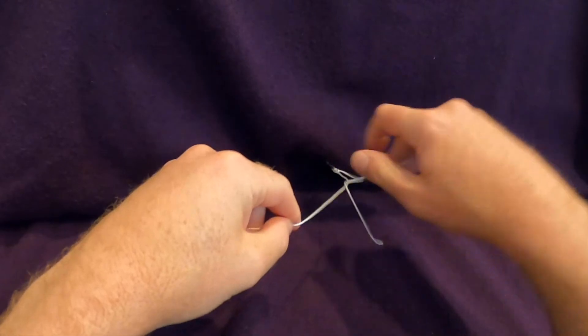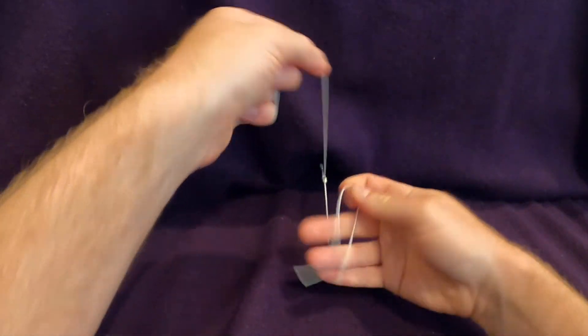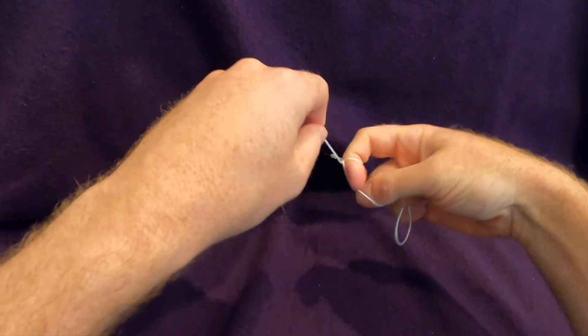Let's watch a few throws in normal speed here so you can get a general idea of the feel of this technique. Right now we're performing right hand knots.